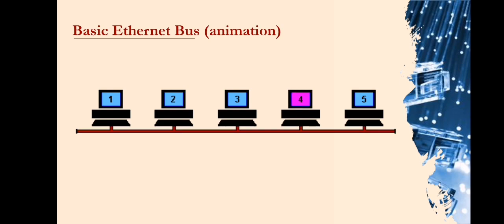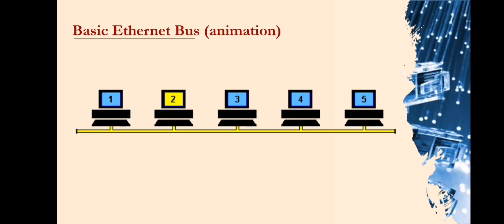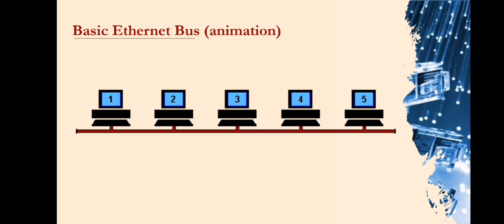Machine 4 then sends a message back to Machine 2 acknowledging receipt of the data, represented by the purple flashing screens. But what happens when two machines try to transmit at the same time? A collision occurs and each machine has to back off for a random period of time before retrying.